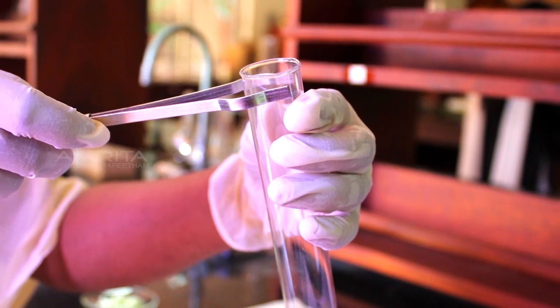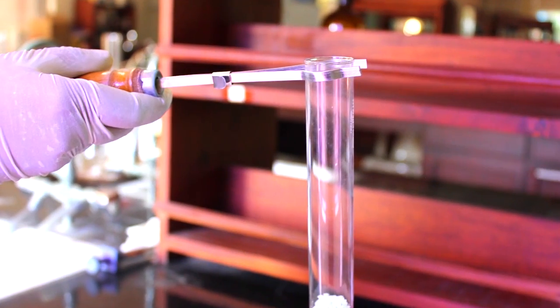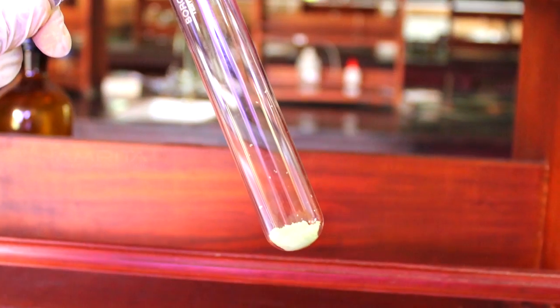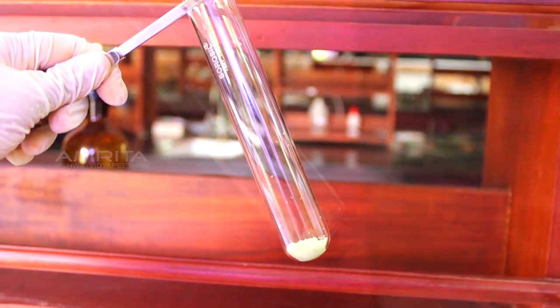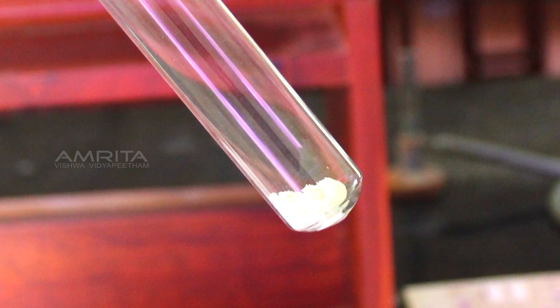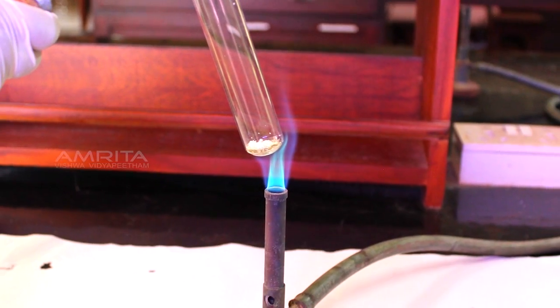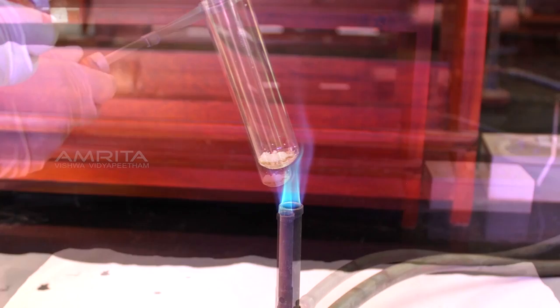Hold the boiling test tube with a test tube holder and note the colour of the hydrated ferrous sulphate crystals, which may be light green in colour. Heat the boiling tube over the flame of a Bunsen burner.